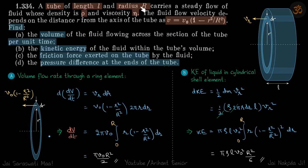We have a tube of length L and radius R. Through this tube some liquid is flowing, and from the axis, if you go to the distance r, the velocity of the liquid varies by a given relation. This makes sense because when small r becomes capital R, the velocity of the liquid is zero, which should happen at the wall. We need to find the volume flow per unit time, the kinetic energy of the liquid inside the tube, the frictional force exerted on the tube by the liquid, and the pressure difference at the ends of the tube.